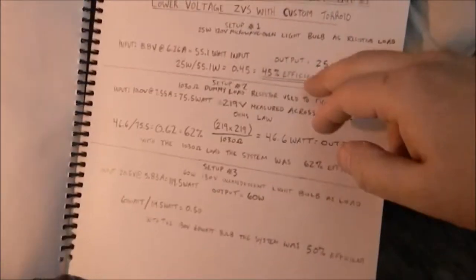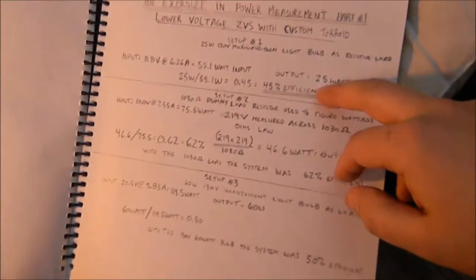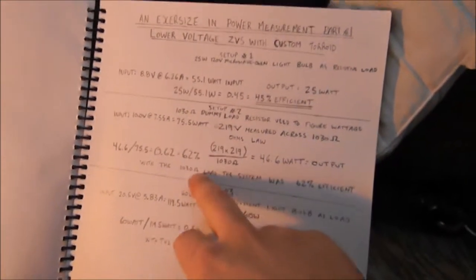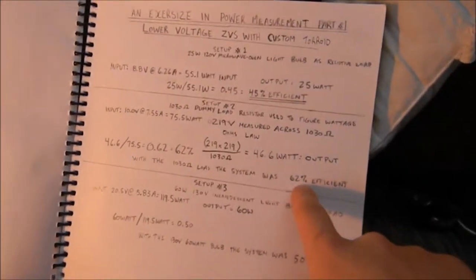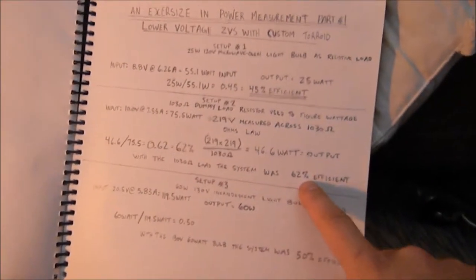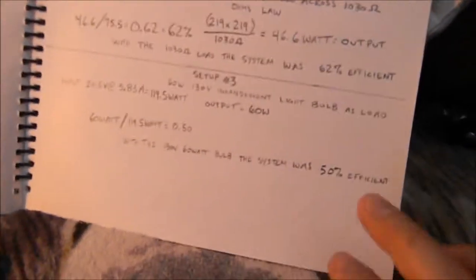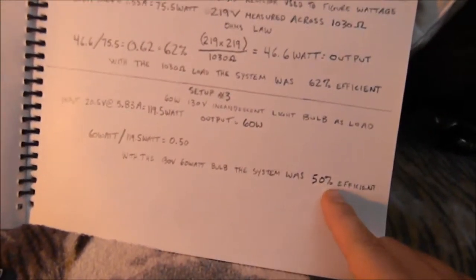Okay, so for setup one we got 45% efficiency with that little bulb. Pretty crappy. With the big resistor, the dummy load resistor at 130 ohms, we had about 62% efficient, so a big jump from 45. And then with the last one we met them in the middle with 50% efficient.